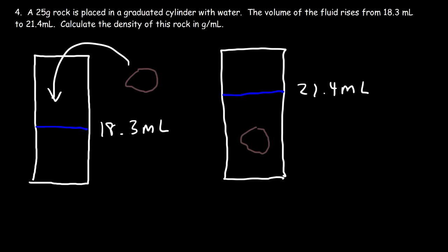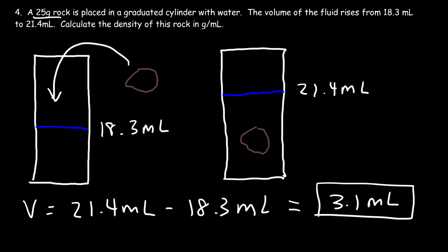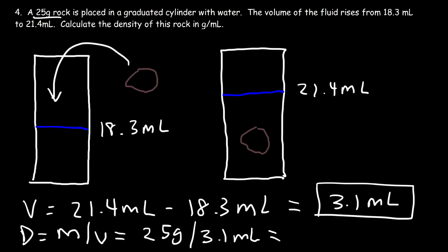The difference in volume is equal to the volume of the rock. So the volume of the rock is 21.4 minus 18.3, which is about 3.1 milliliters. Now that we have the volume of the rock and we also have the mass of the rock, we can calculate the density. The density is mass divided by volume: 25 grams divided by 3.1 milliliters, which is about 8.06 grams per milliliter. That's the density of the rock.